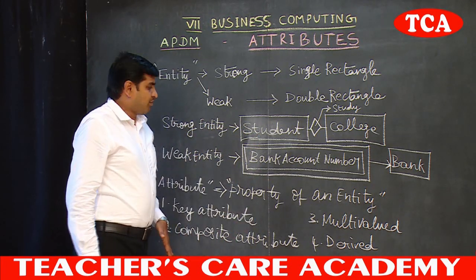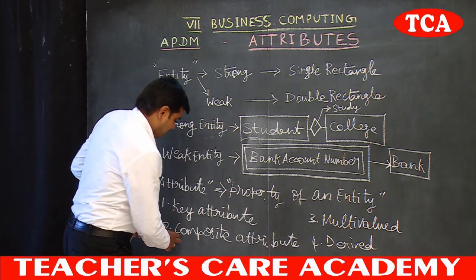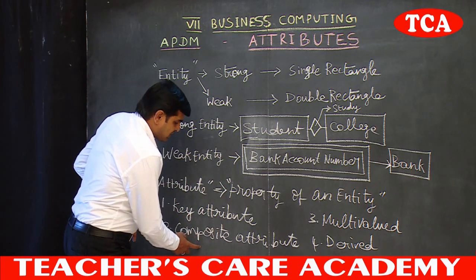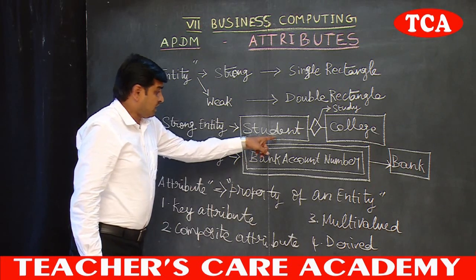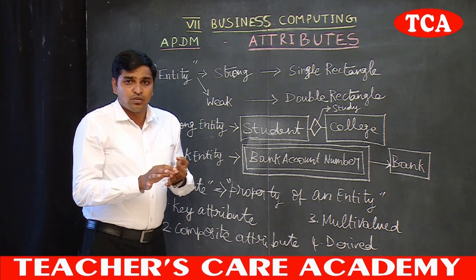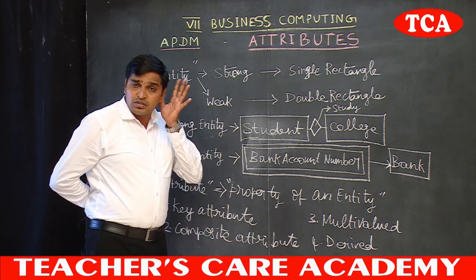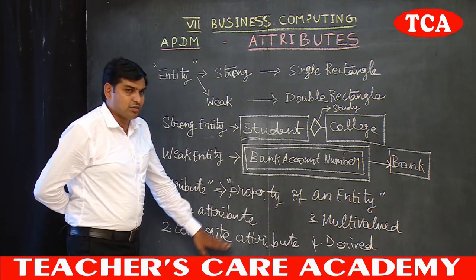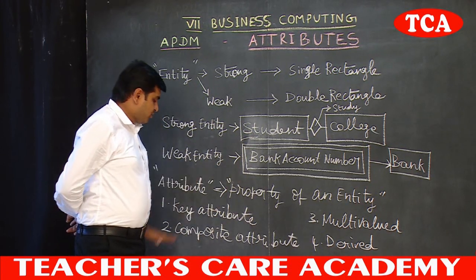Composite attributes: a particular field will be made up of a number of sub-fields. For example, address is one attribute. If you look at the address, the total address is composed of sub-attributes: door number, flat number, pin code, and postal identification number. All these combined form composite attributes.